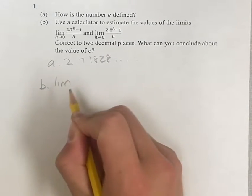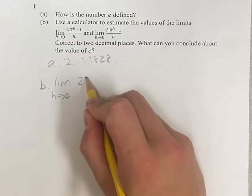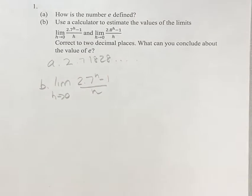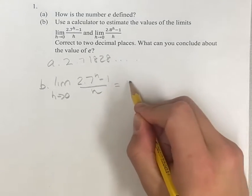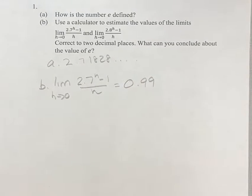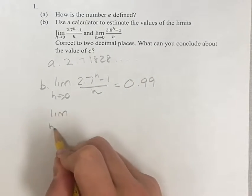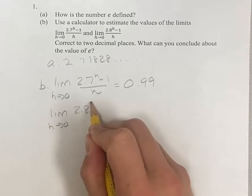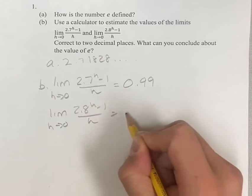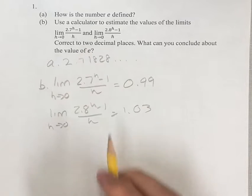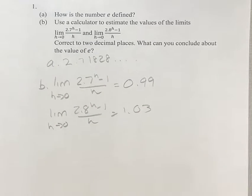If you plug this in, of 2.7 to the h. If you calculate this, you get 0.99. If you calculate this, you get 1.03. Two decimal places, right? Obviously, it'll be a little bit different than that, but it's going to be very close to this.